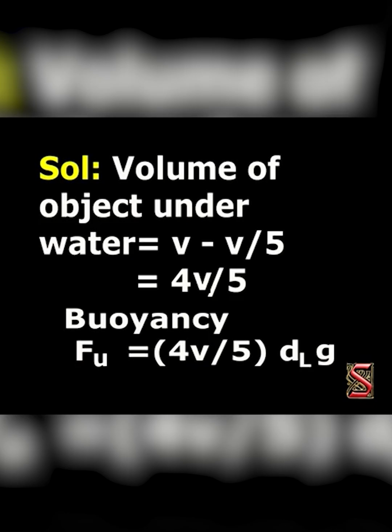Volume of object under water is equal to total volume minus V/5, since 1/5 is above water. So the buoyancy force is equal to (4V/5) into density of liquid into acceleration due to gravity.